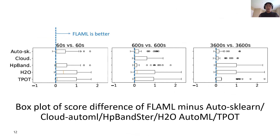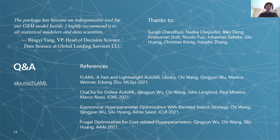The box plot chart shows the distribution of score difference between FLAML and each competitor at different time budgets. With varying time budgets from 1 minute to 1 hour, FLAML outperforms top-ranked open-source AutoML libraries as well as commercial AutoML services in most tasks given the same budget. FLAML has a significant advantage over all the others. I hope you check out both our paper and our library on GitHub, and we welcome your feedback and contributions.